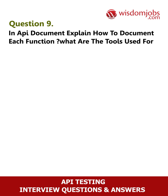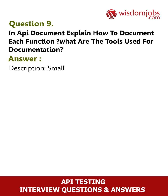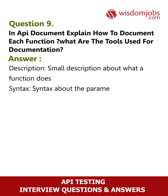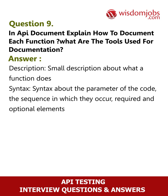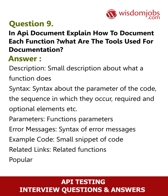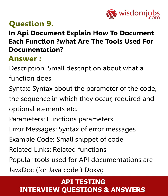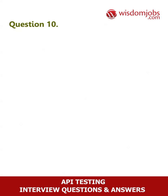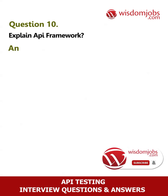Question 9: In API documentation, explain how to document each function and the tools used. Answer: Each function should include a description (small description of what the function does), syntax (syntax of the code parameters, sequence in which they occur, required and optional elements), parameters, error messages (syntax of error messages), example code (small snippet of code), and related links to related functions. Popular tools used for API documentation are Javadoc for Java code and Doxygen for .NET code.